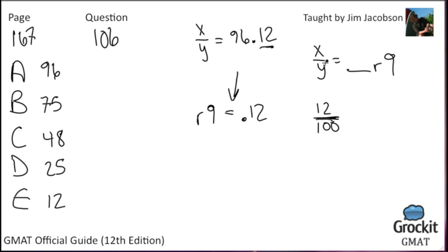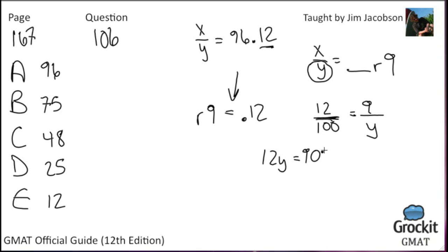We convert both to fractions. 0.12 is 12 over 100. Expressing remainder 9 as a fraction: when dividing x by y, the remainder expressed as a fraction uses y as the denominator — so the remainder 9 becomes 9 over y. So 12 over 100 equals 9 over y. Cross-multiply: 12y equals 900, and y equals 75, answer choice B. Remember that a decimal and a remainder are the same thing — the not-completely-whole bits left over from division.